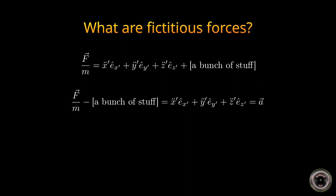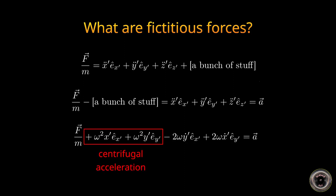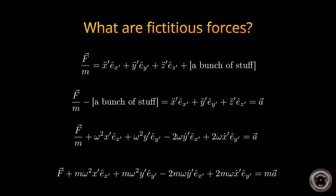If we write this bunch of stuff explicitly it will look like this. We call this part that only depends on position the centrifugal acceleration and this part that only depends on velocity, so derivatives of position, the Coriolis acceleration. When they are multiplied by the object's mass like this, they become the centrifugal force and Coriolis force.